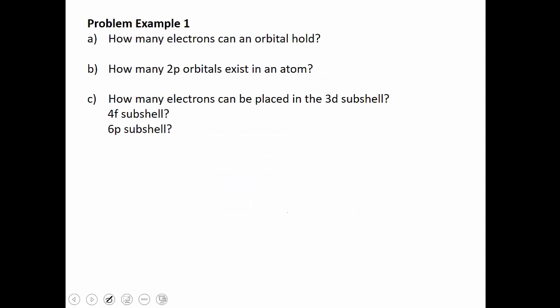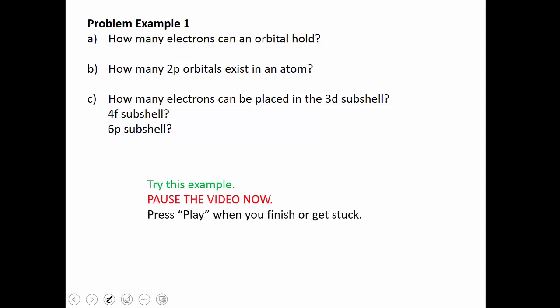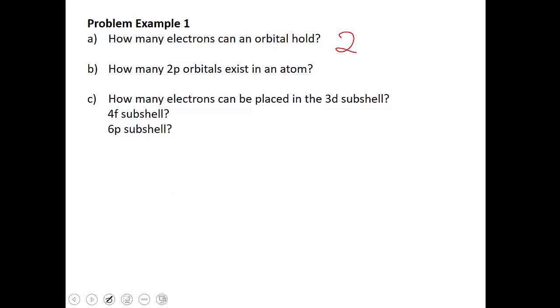Before moving on to the last two quantum numbers, let's check the first two with an example problem. How many electrons can an orbital hold? That would be two. All orbitals, no matter what type, can only hold two electrons. How many 2P orbitals exist in an atom? 2P is a P subshell, and all P subshells — whether 2P, 3P, or 4P — all have three orbitals.